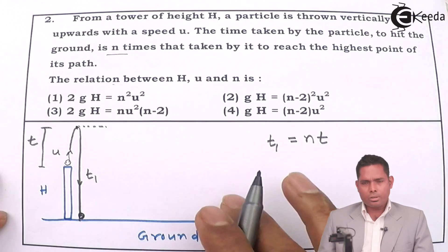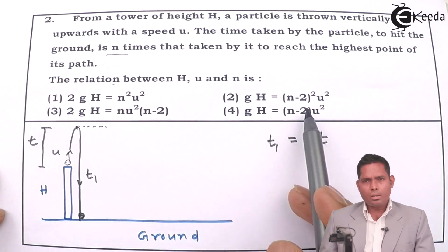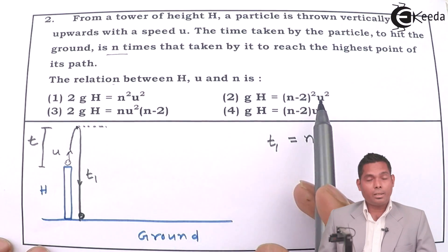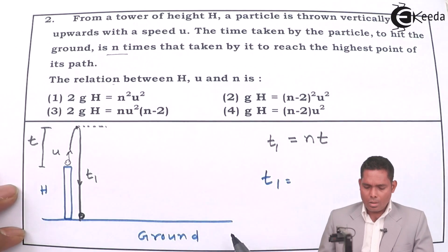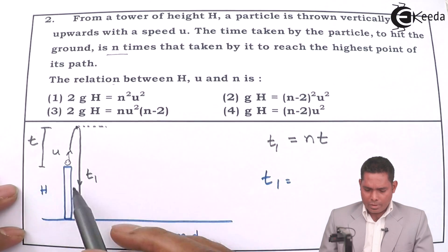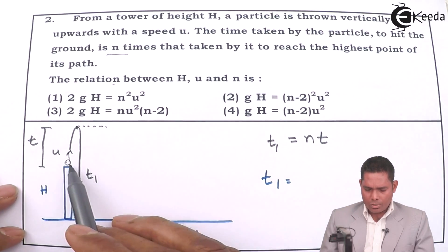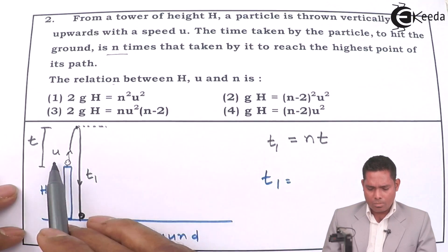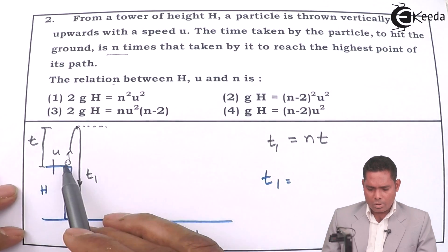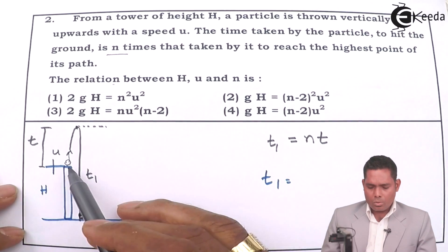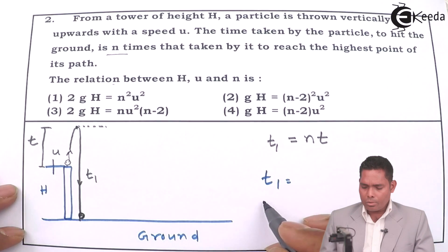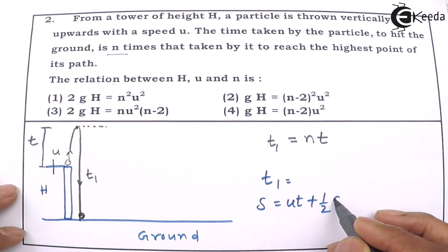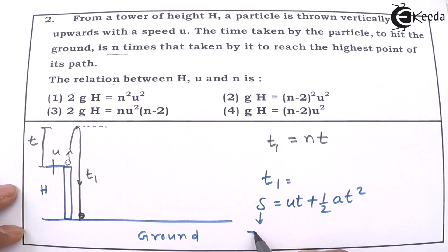This can be solved because we need to eliminate t from the equations. The options give relations between g, h, n, and u. So we must write the expression for t1 and for t. To find t1, I will choose the top of the tower as the origin of the coordinate system. I'll use the equation s = ut + ½at².